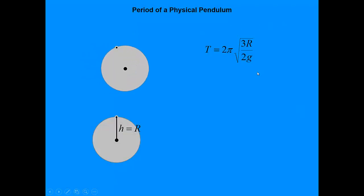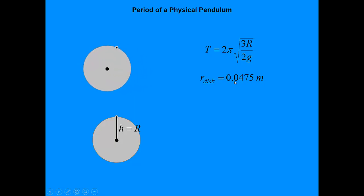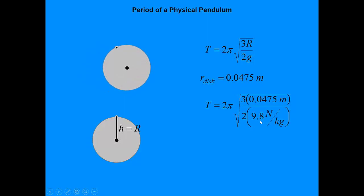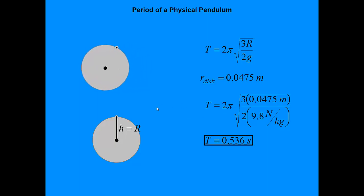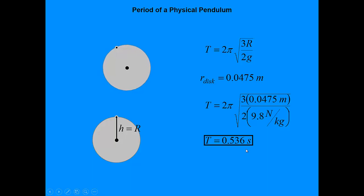Once we have this equation, in class I'll actually set this up to show you that everything works. The disk we're going to use has a radius of 0.0475 meters — a nine-and-a-half centimeter diameter — and mass doesn't matter. With g equal to 9.8 N/kg, plugging in gives a period of a little over a half a second. I'll set it up with the rotary motion sensor to make an angular position versus time graph, measure 10 periods and divide by 10, and we'll get a number very close to this.